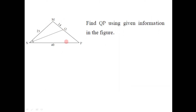Let us have another problem. The question is based again on this diagram. We have to find QP using the given information. As we can observe, since angles MNQ and PNQ are shown by the same symbol, segment NQ is the angle bisector of angle MNP. The three lengths of the sides are given.